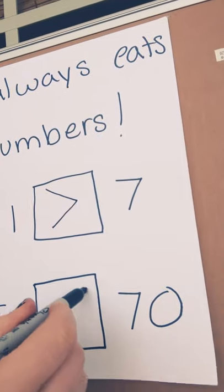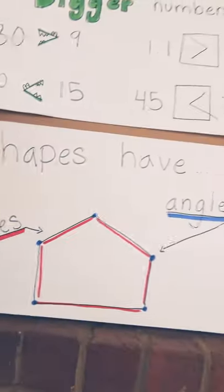If you said 70, ding, ding, ding, you got it. Alright, cool. So also in math, we're going to be talking about shapes. Oops, I'll keep it this way.